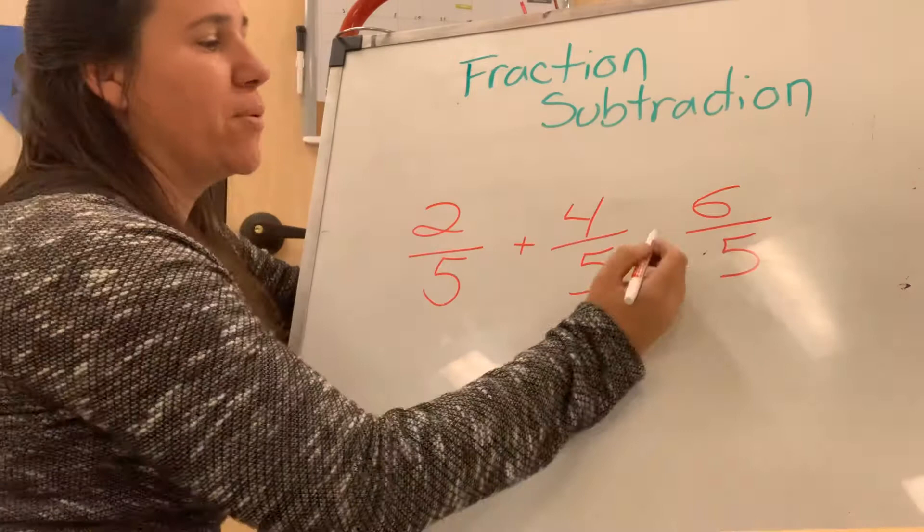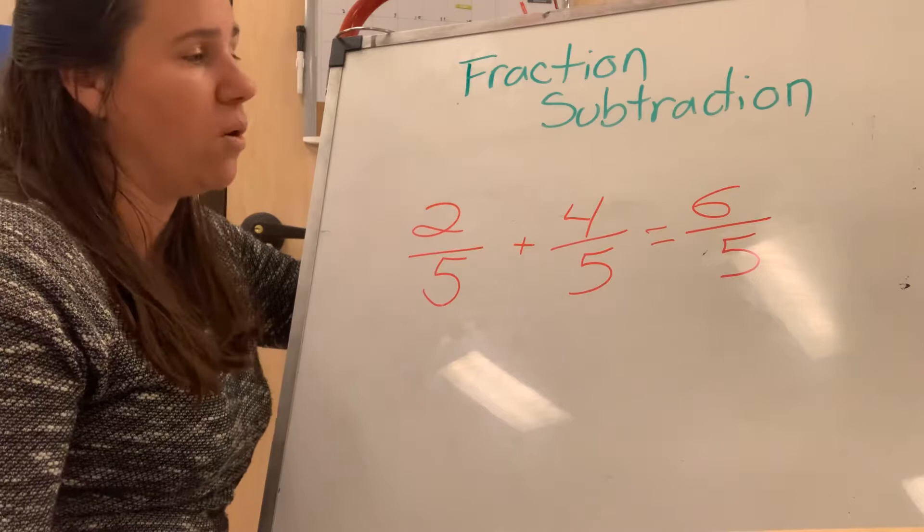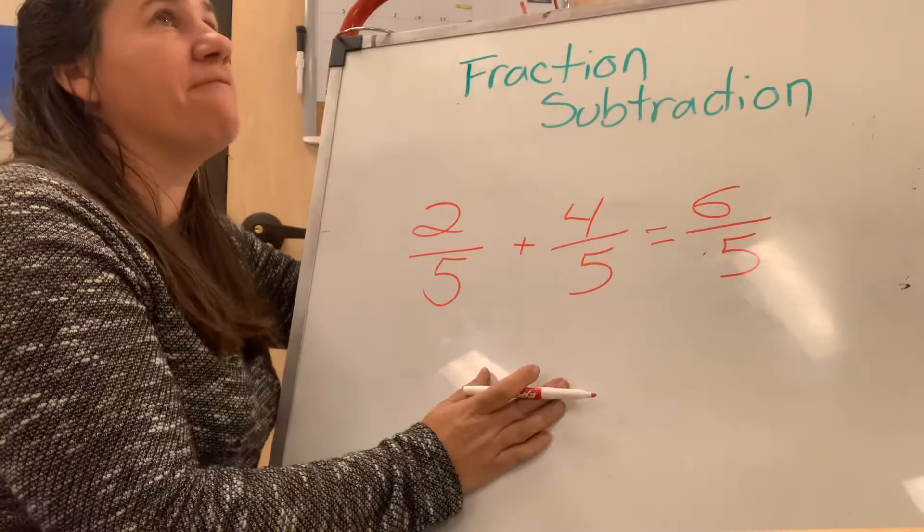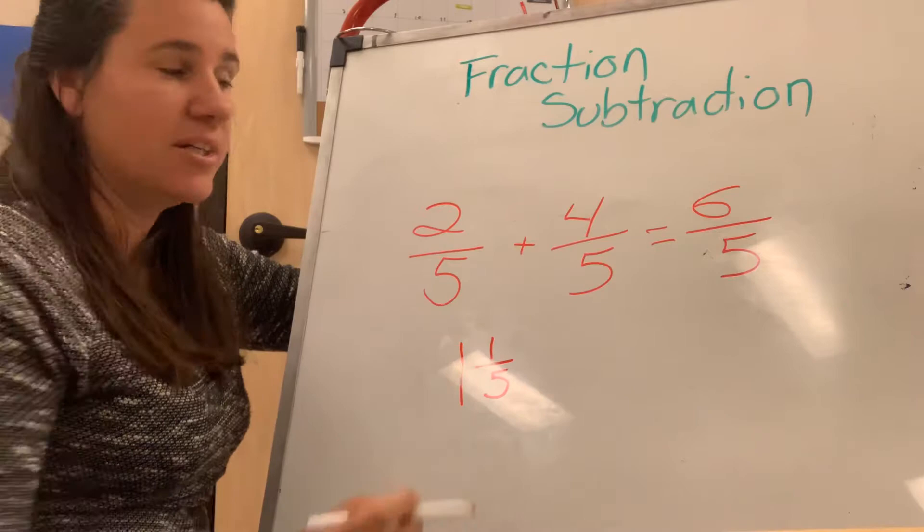But we can't keep six-fifths because it's an improper fraction. So an improper fraction means the numerator is larger than the denominator. So that means that it's more than one whole. And the denominator tells me how many parts would make up a whole. So I know here that my denominator is a five, and I have a six at the top. Well, five pieces would give me one whole. So six minus five would be one whole. And I'd have one piece left over. So that'd be one and one-fifth. So two-fifths plus four-fifths is one and one-fifth.